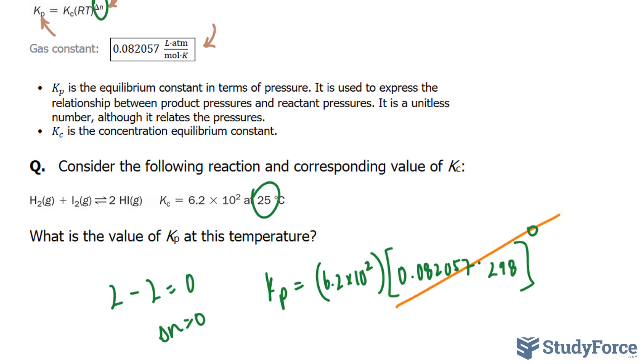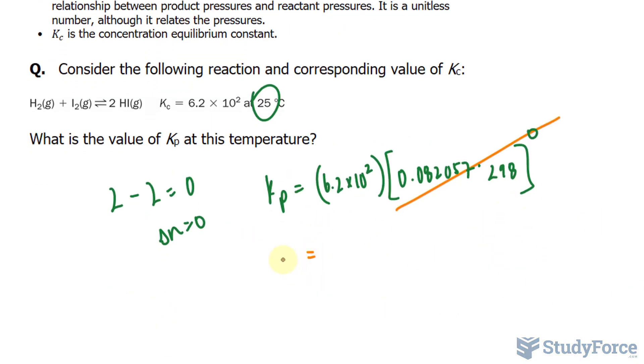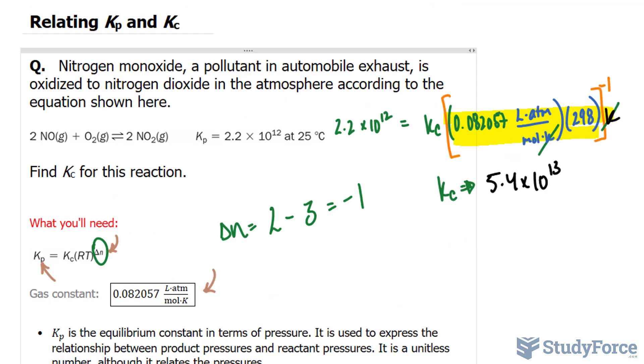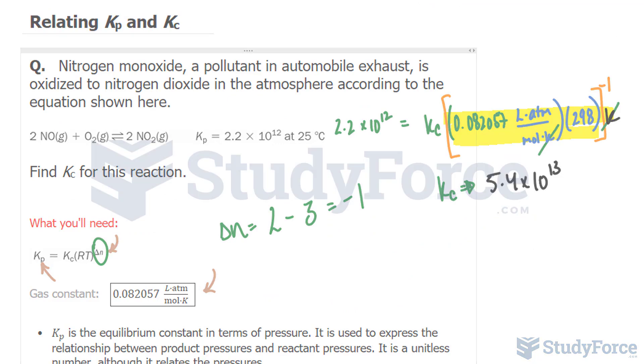So technically all of that is 1. And Kp is the same as Kc. And there you have it. That is how to relate Kp and Kc.